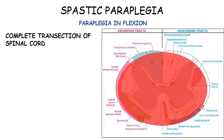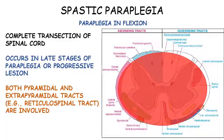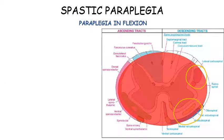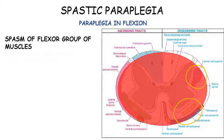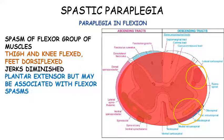Regarding paraplegia in flexion, there is complete transection of the spinal cord. It is generally a late feature or associated with progressive lesions which ultimately involve the whole section of the spinal cord. Here, both the pyramidal and extra-pyramidal fibers are affected, so there is no reinforcement of the extensor group of muscles. Hence, the lower limbs take an attitude of flexion with hip and knee flexed and feet dorsiflexed. The patient adopts lateral decubitus and the heel may touch the hip of the same side. Deep reflexes are diminished. Plantar response, though extensor, may be associated with flexor spasm. Mass reflex is seen in this kind of lesion.